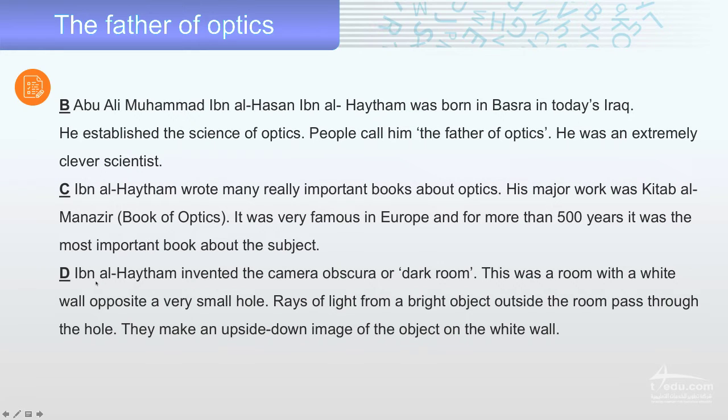Ibn al-Haytham invented the camera obscura, or dark room. This was a room with a white wall opposite a very small hole. Rays of light from a bright object made an upside down image of the object on the white wall.